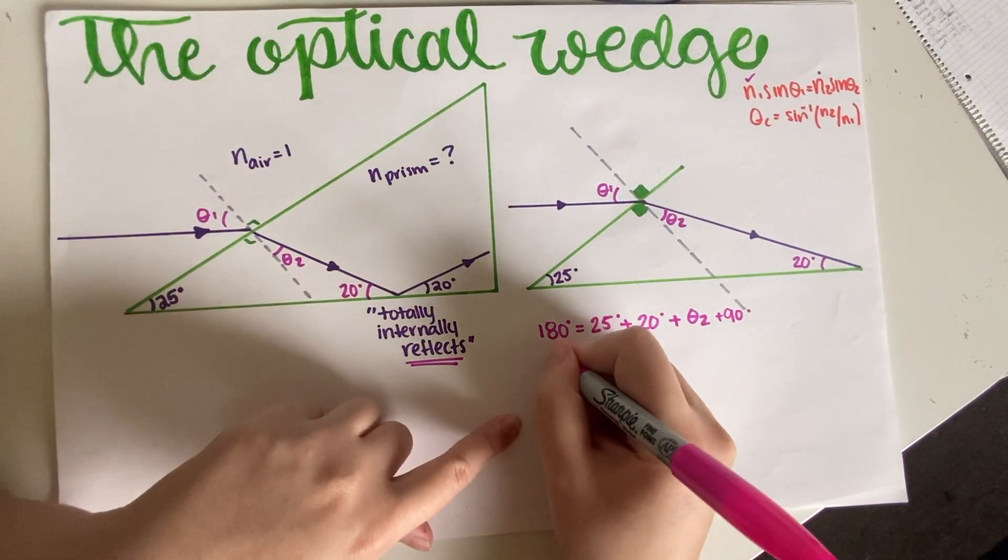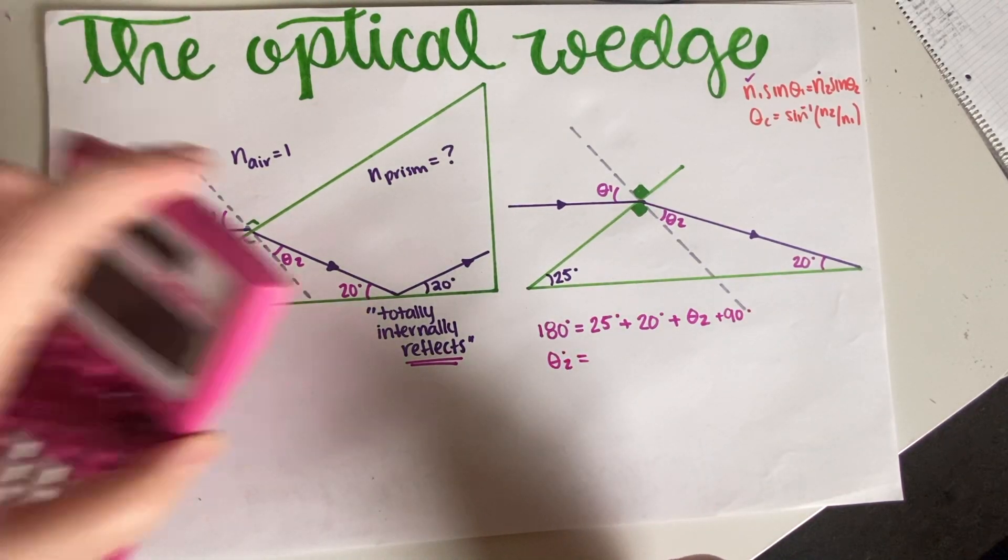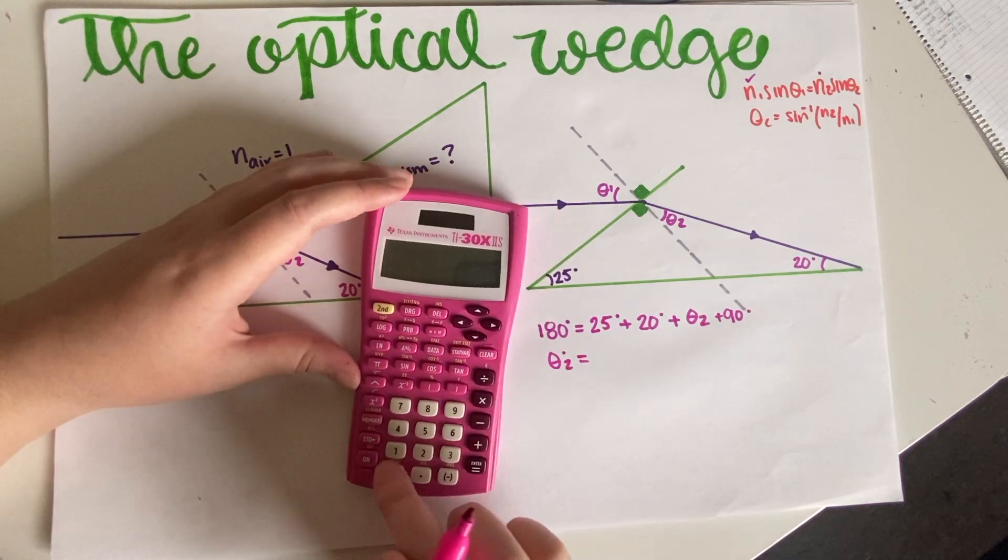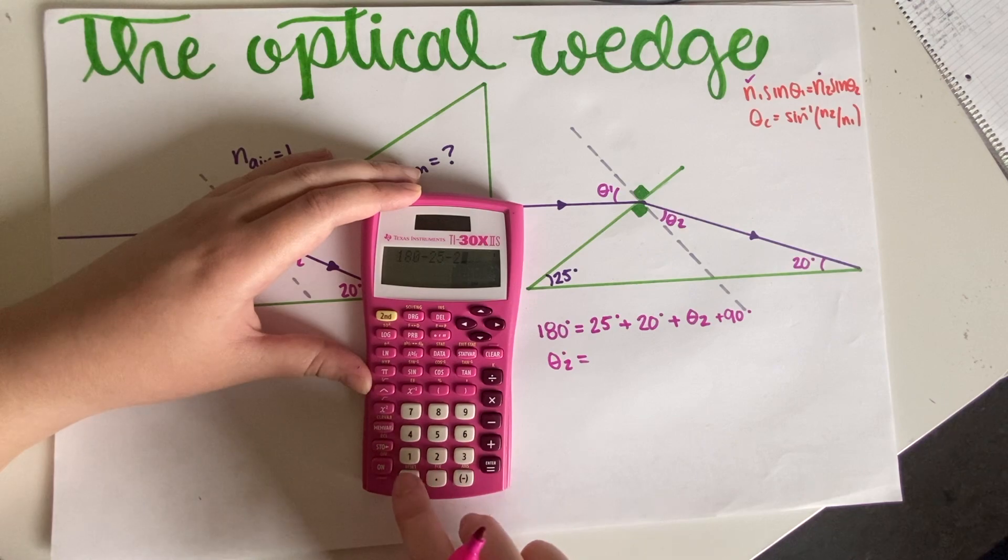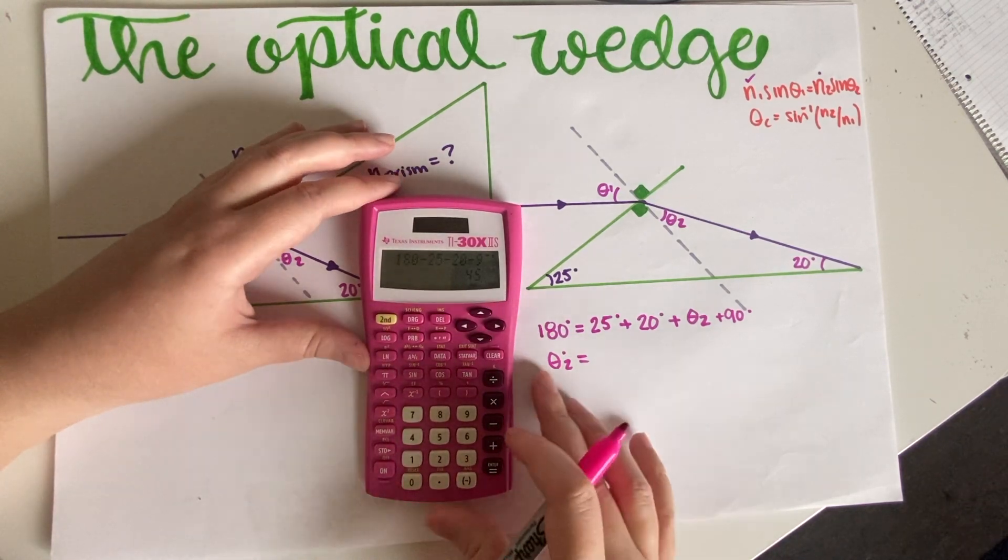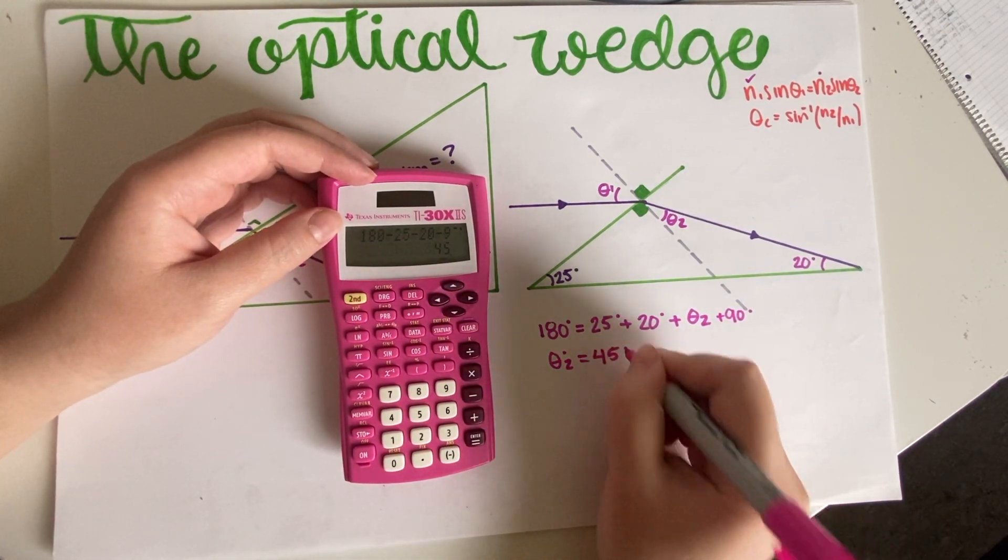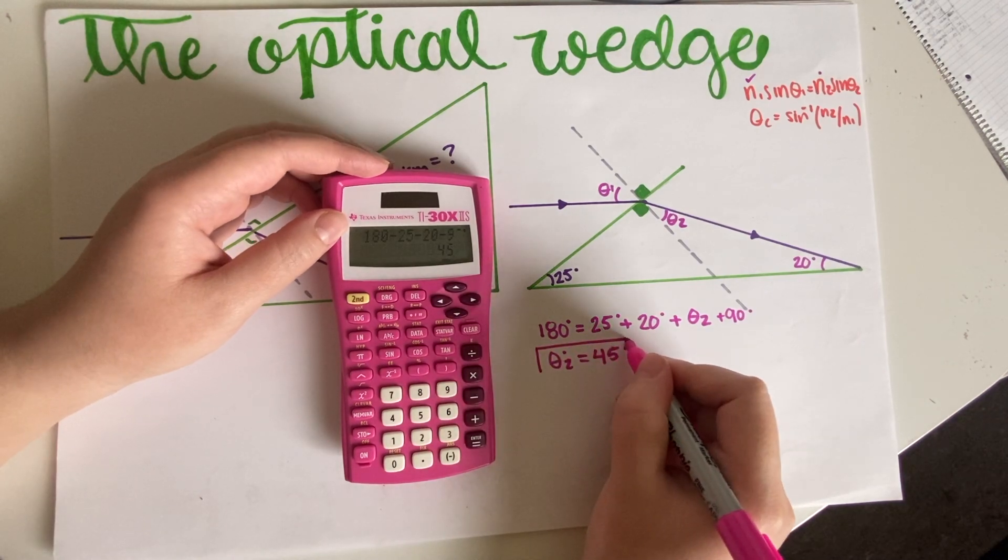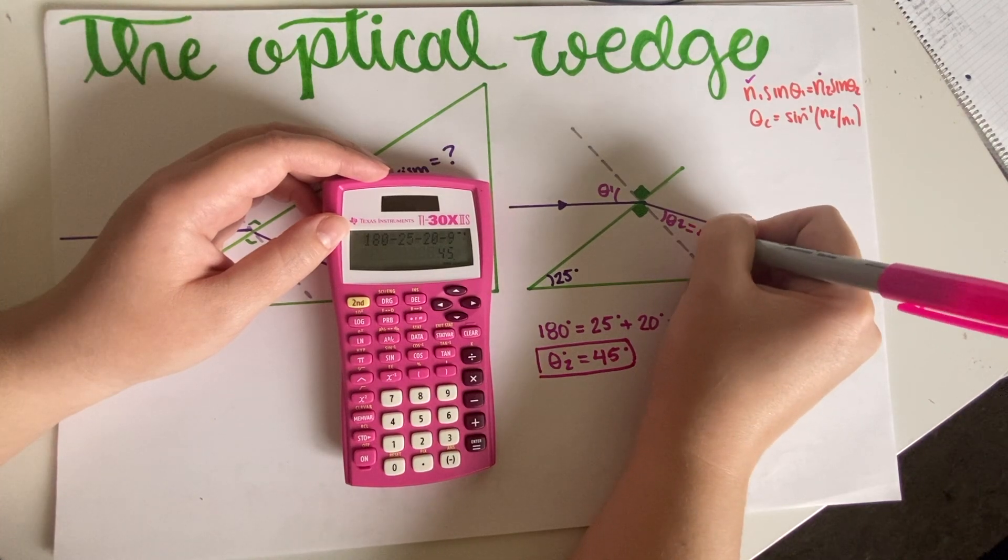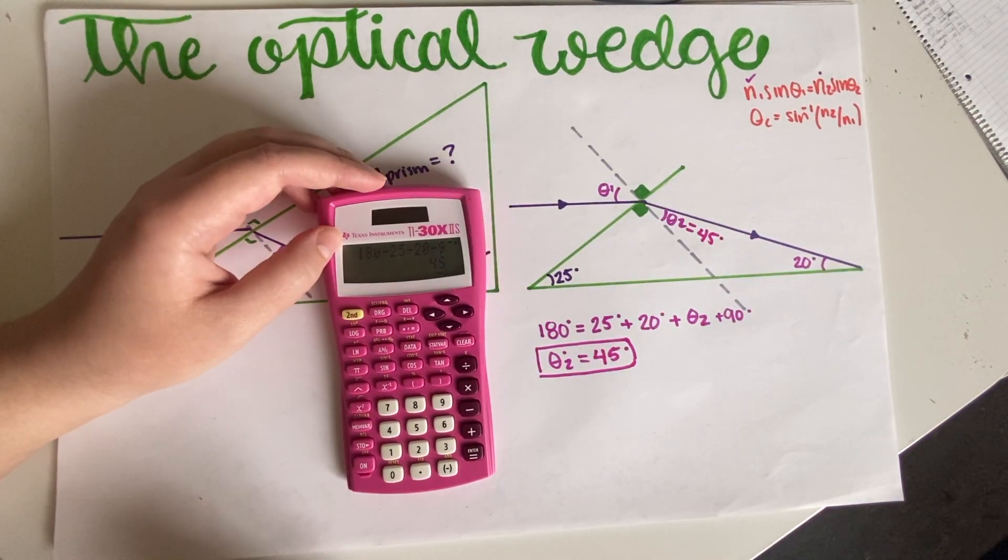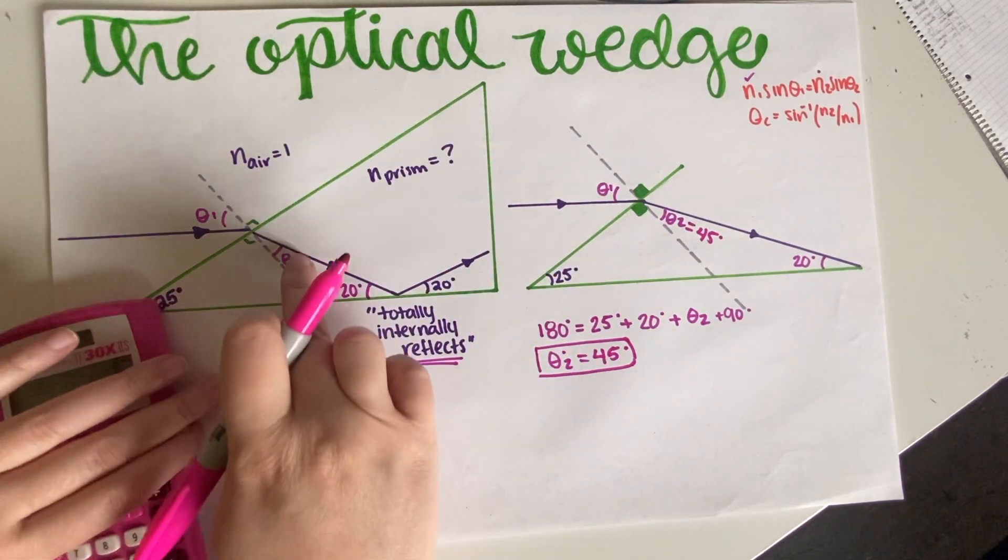So if we go ahead and solve for this angle, that would be 180 minus all of these numbers. So 180 minus 25 minus 20 minus 90, that is equal to 45 degrees. So this angle is 45 degrees.